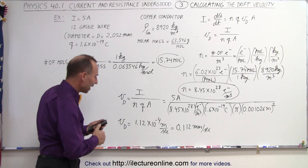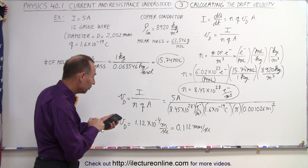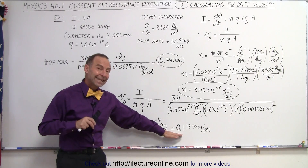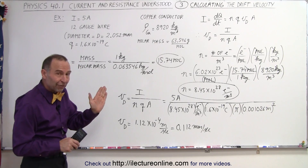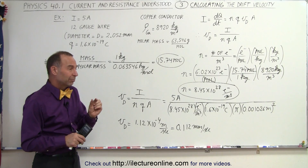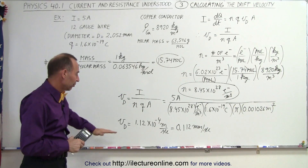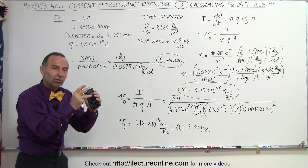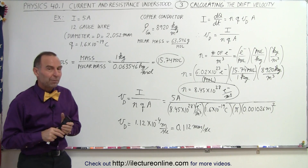Let me quickly check that calculation again: 5 divided by 8.45×10²⁸, divided by 1.6×10⁻¹⁹, divided by pi, divided by 0.001026 squared, equals 1.12 times 10 to the minus 4. So it's about a tenth of a millimeter per second. Even though we have a current of 5 amps — a significant current through a very big wire — we still have a very, very slow velocity. About 10 seconds to go a centimeter, about 100 seconds for 10 centimeters, so many minutes just to cover 1 meter. Charges are moving, bumping all around — massive quantities of charges are moving, but at a very slow speed along the conductor, even though they're moving quite fast within the conductor itself. That's what we mean by drift velocity.